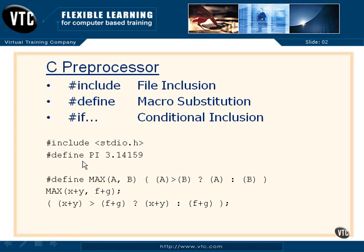Here's a very simple define of the letters PI to be the number 3.14159. We normally make these constants uppercase so that you can see them when you're working with them in the code. So if you set something equal to capital PI, it's actually going to be replaced before the code is ever compiled with this number.